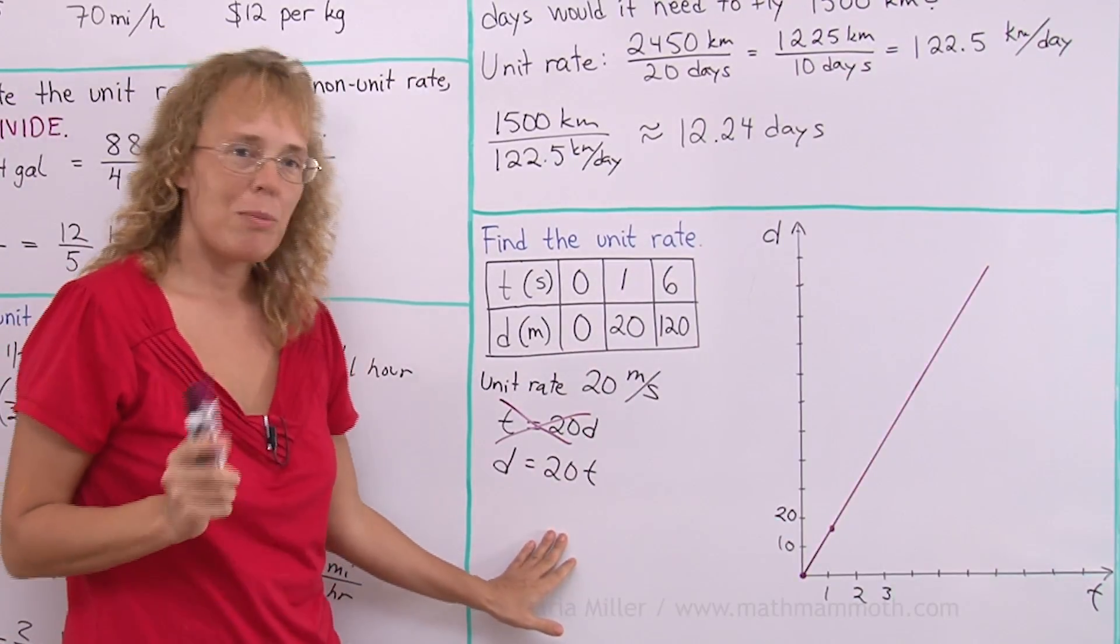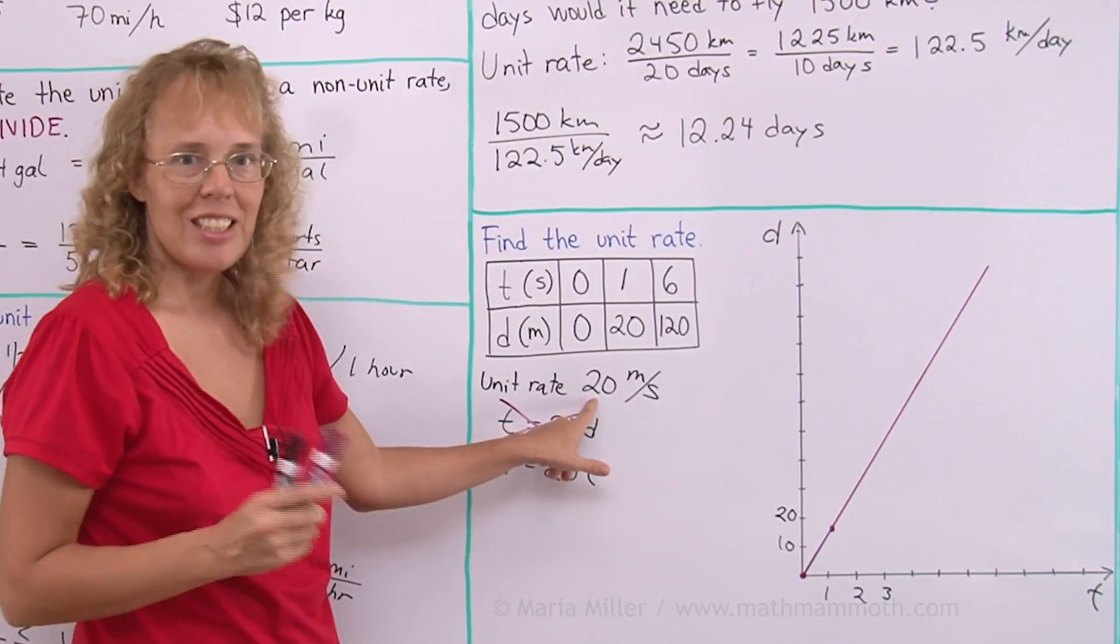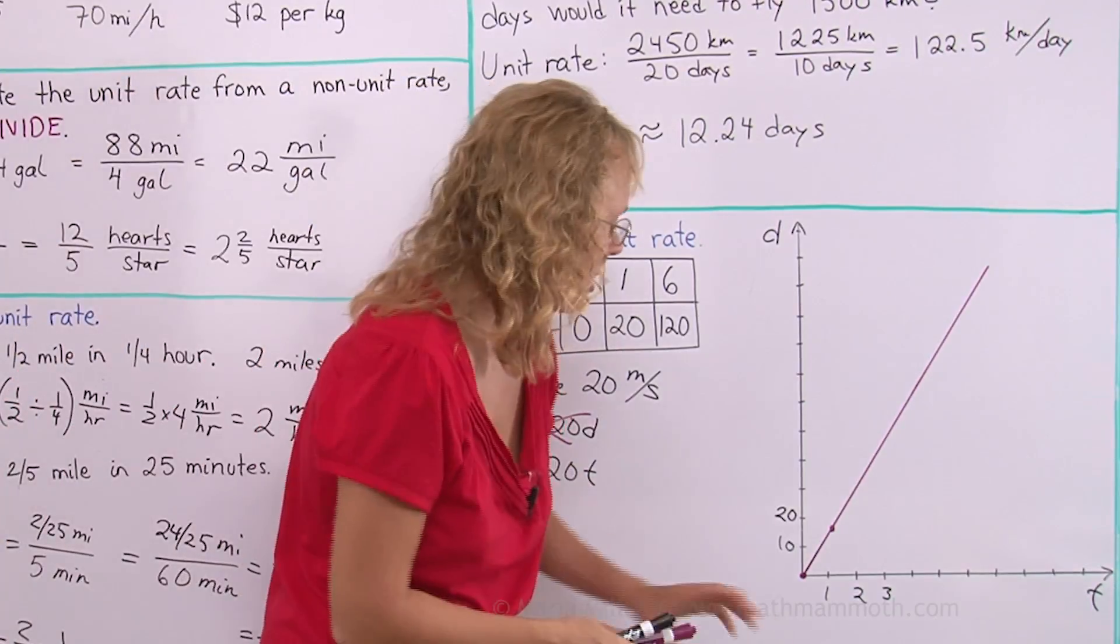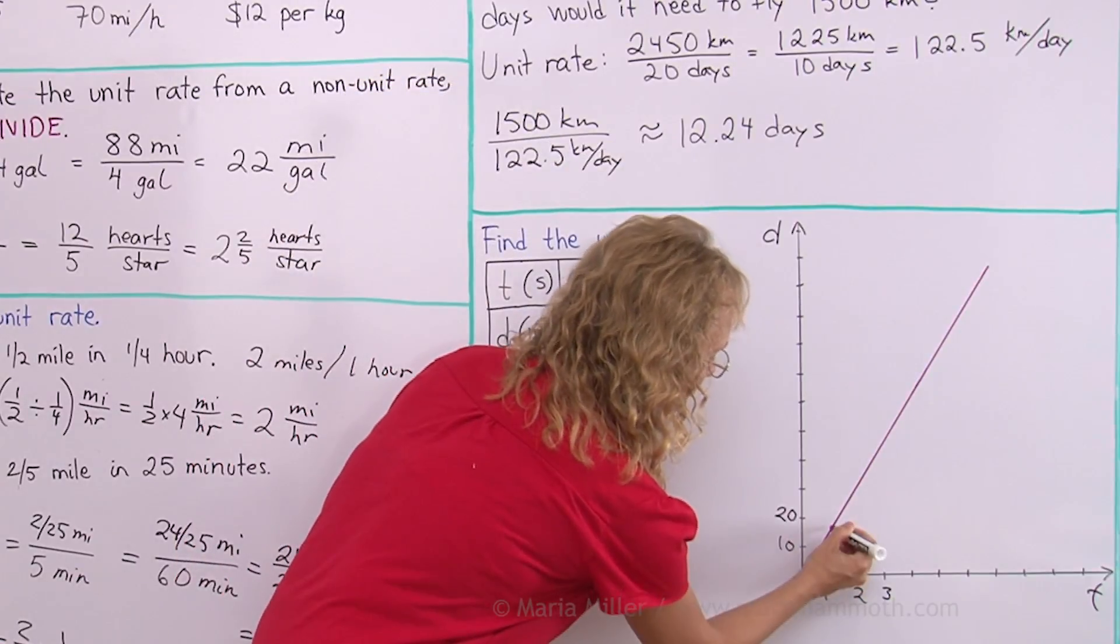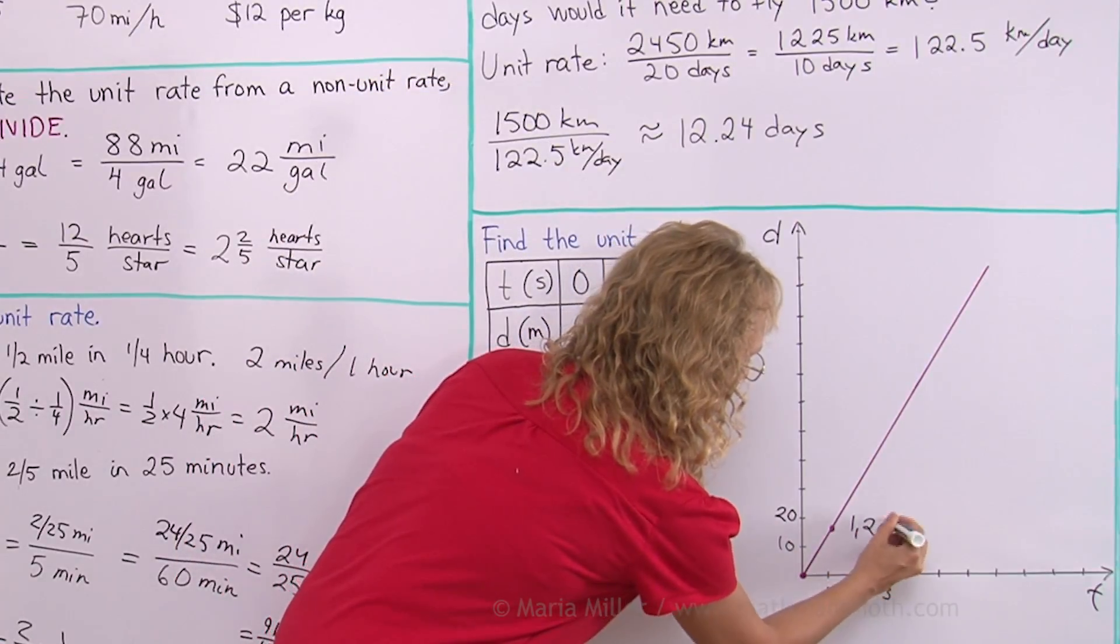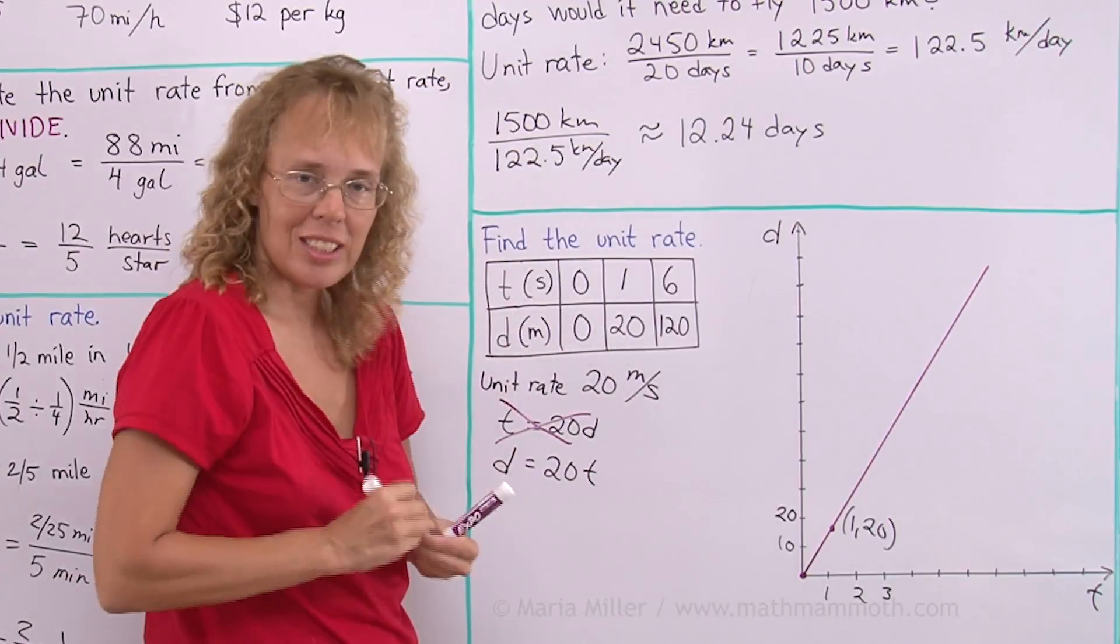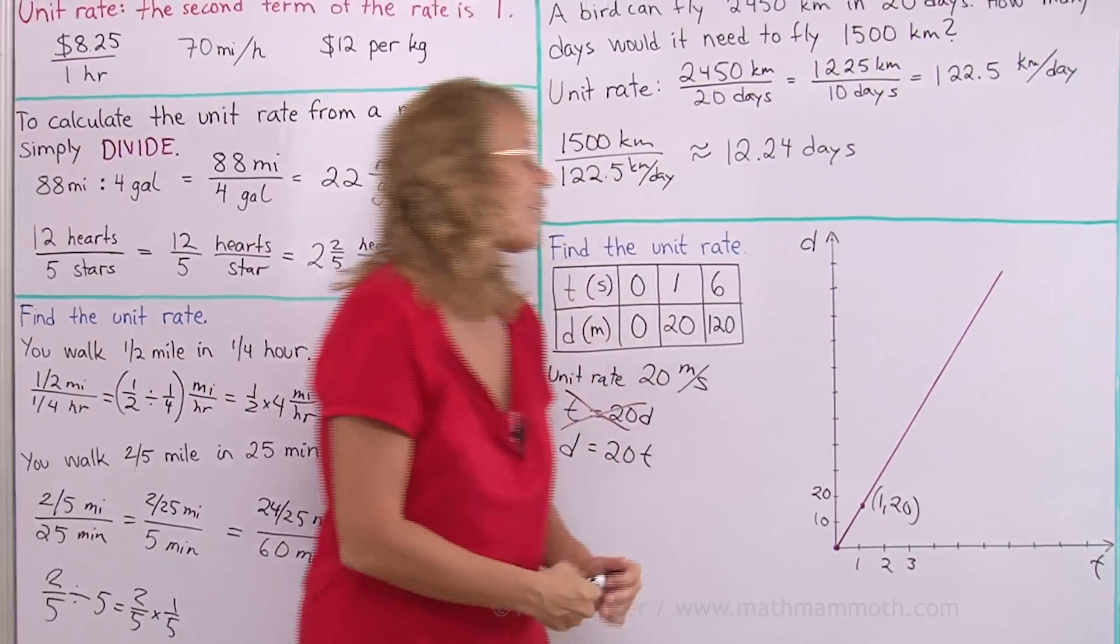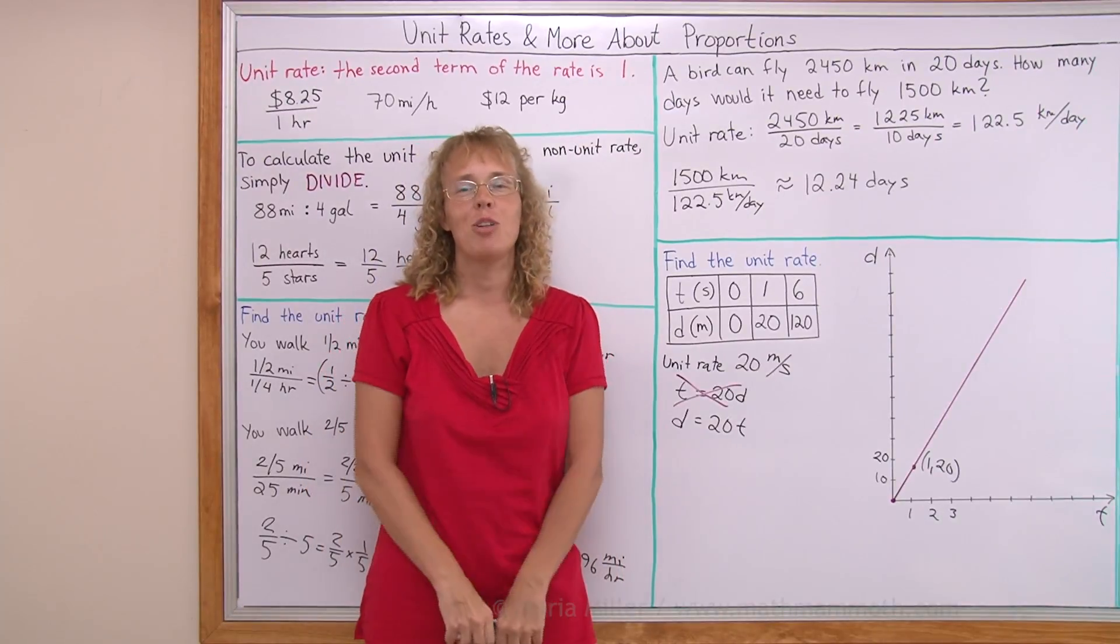The main thing I want you to keep in mind is that the unit rate is also the slope. 20 is the slope. And on the graph, there's the point 1 and something. 1, 20 is the point signifying to us the unit rate, also signifying to us the slope. We're all done with this and I hope it was helpful.